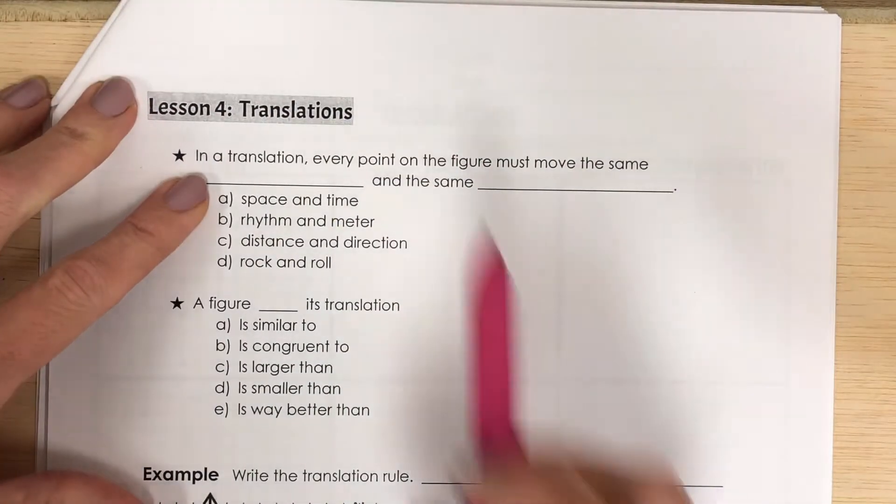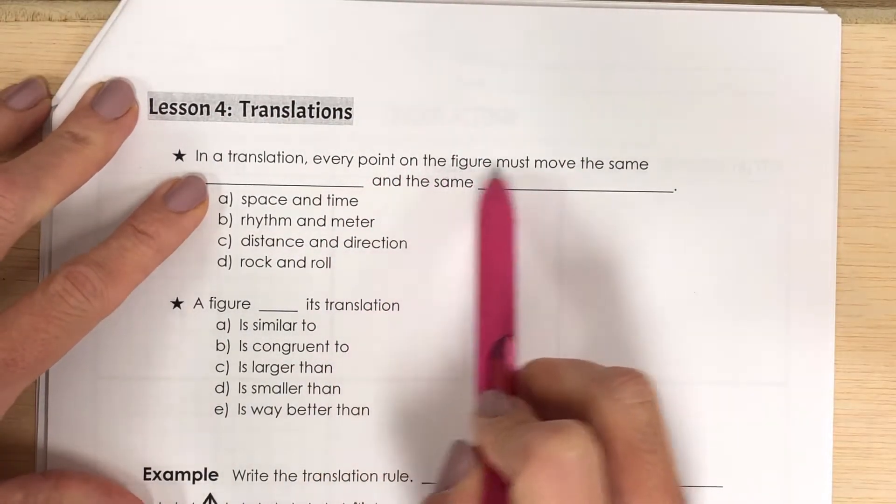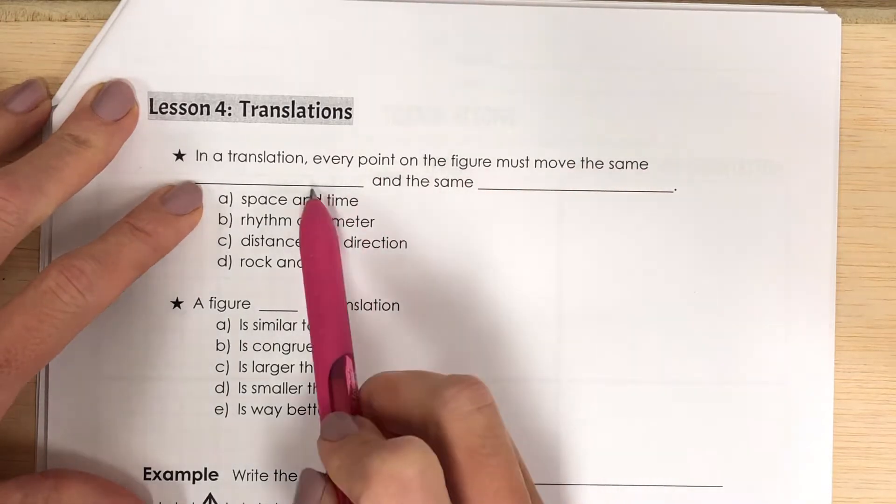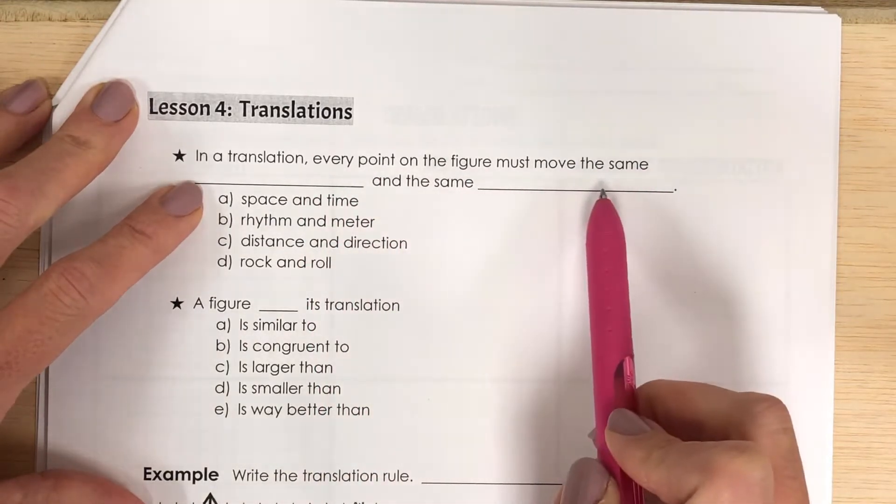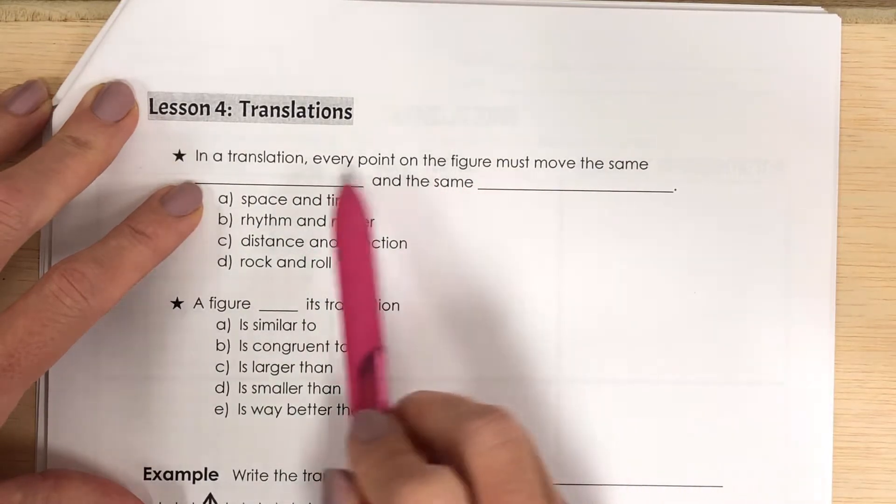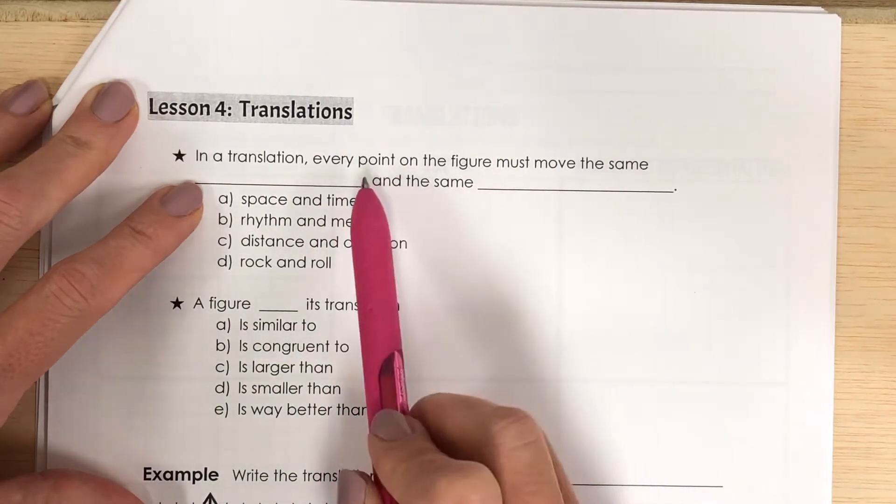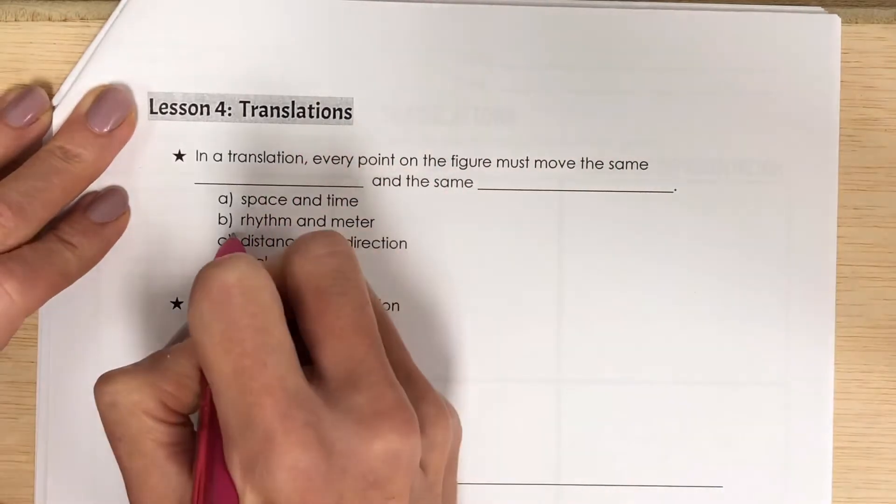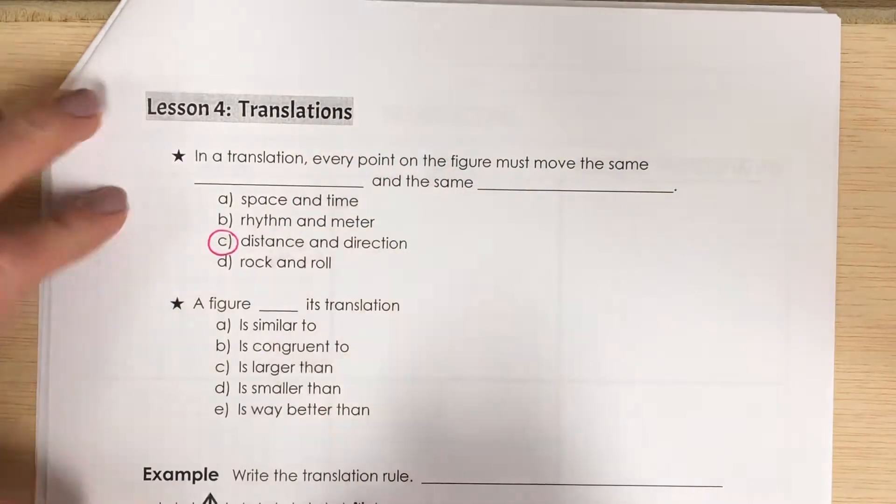So in a translation, every point on the figure must move the same blank and the same blank. The same space and time, rhythm and meter, distance and direction, or rock and roll. Let's say it's the same distance and the same direction.